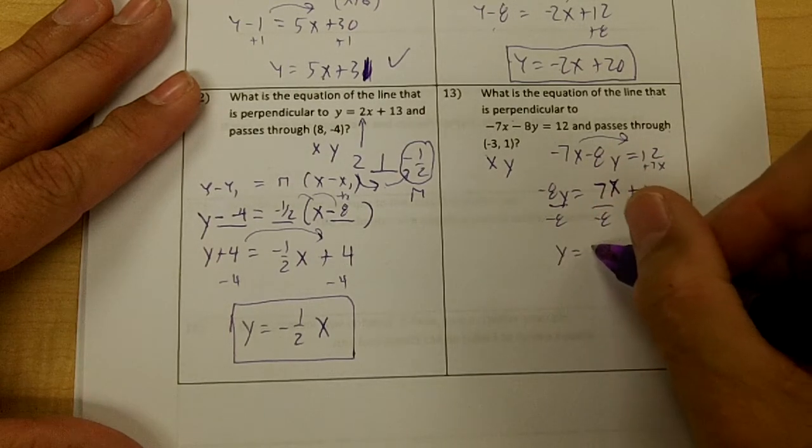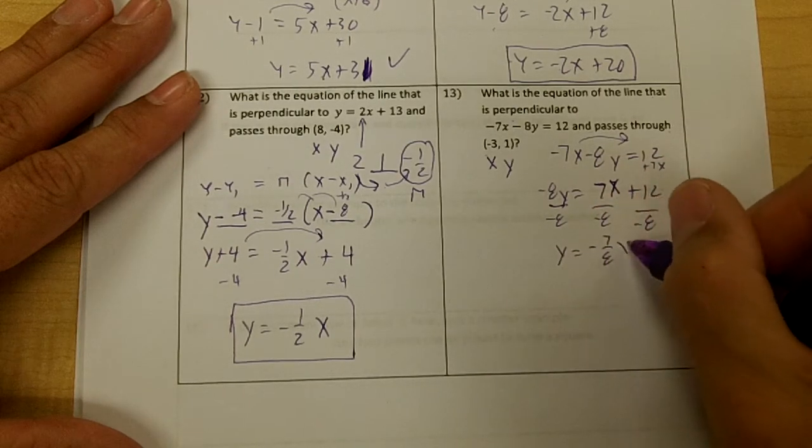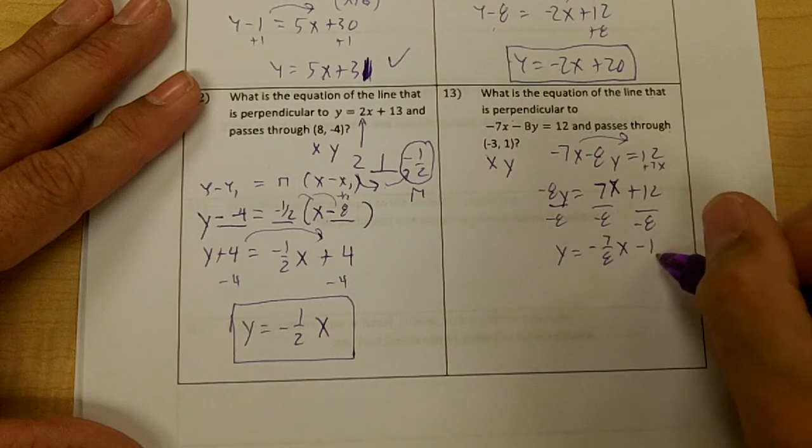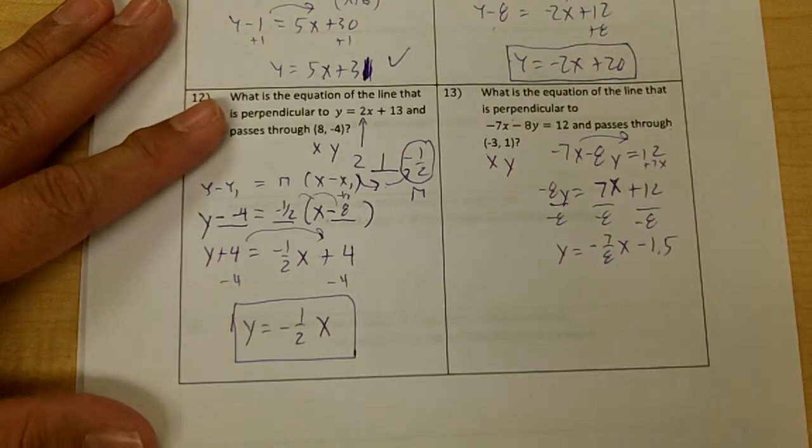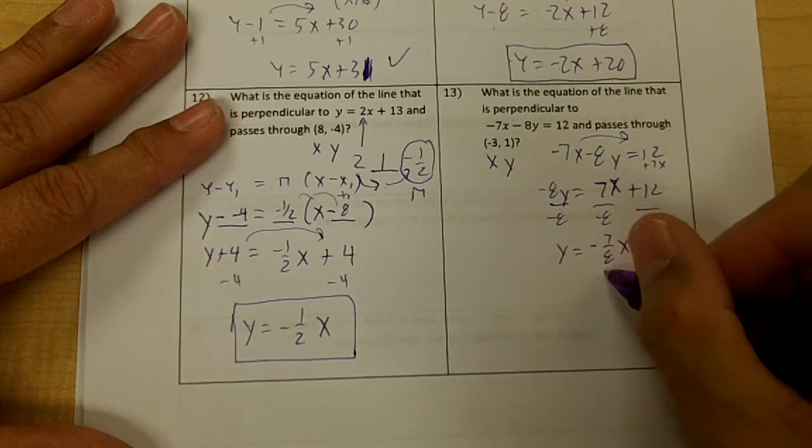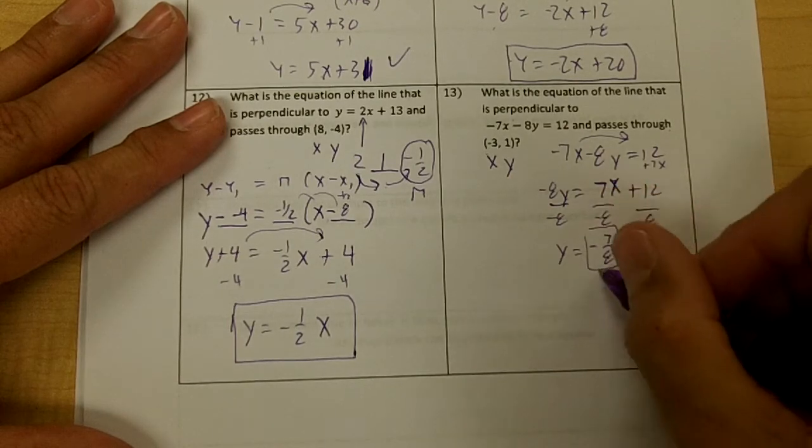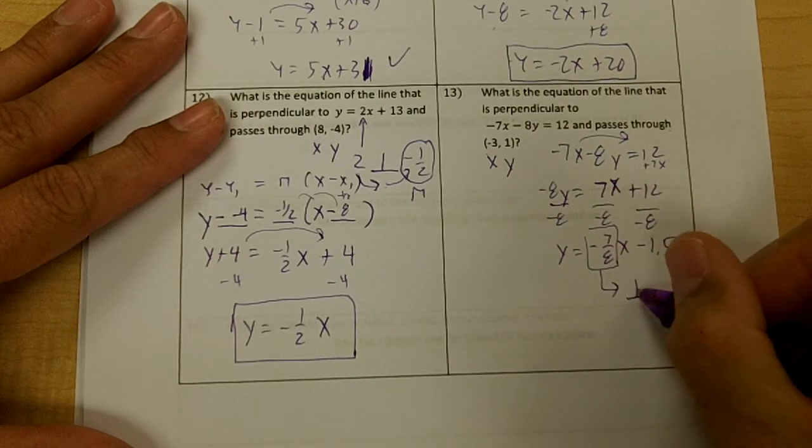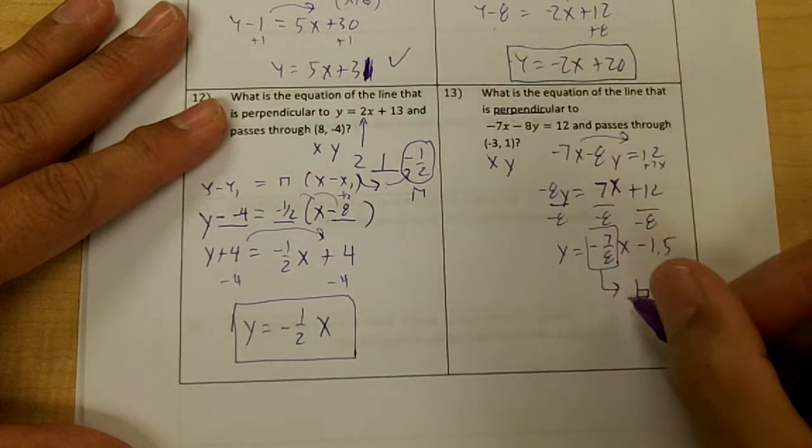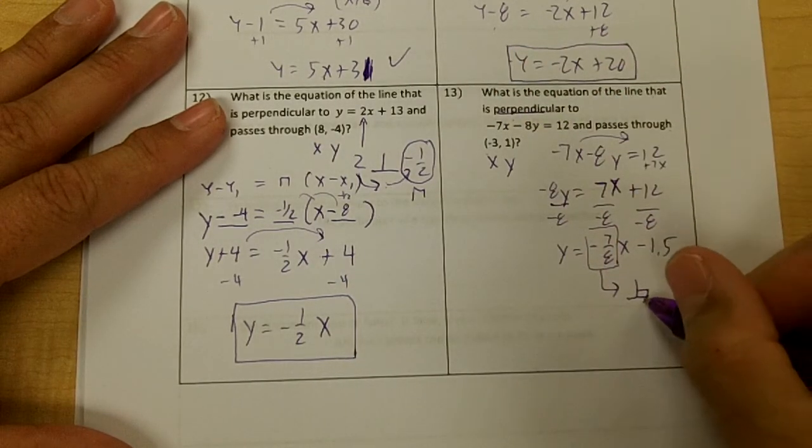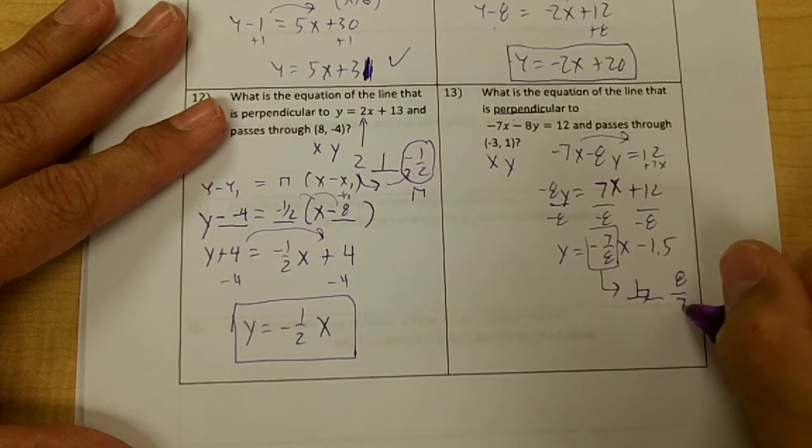You would get y equals negative 7 over 8x minus 1.5, or 3 over 2. Now then, this is my slope, but I want it to be perpendicular. So I'm going to do the opposite reciprocal, and that's going to turn into 8 over 7.